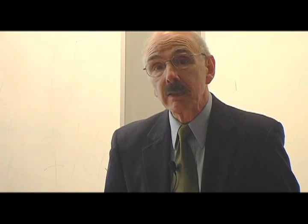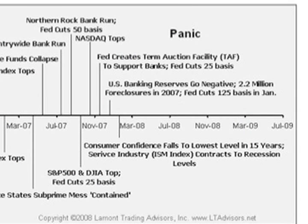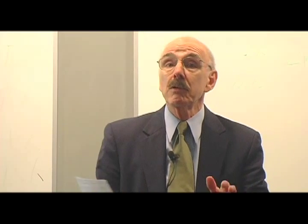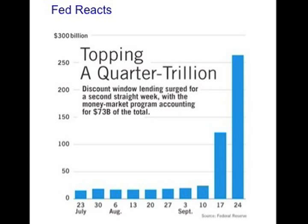The Fed created an auction facility to provide emergency funding for banks in November of 2007. In December of 2007, U.S. banking reserves turned negative. In March of 2008, consumer confidence fell to its lowest level in 15 years. In July of 2008, Freddie Mac collapsed. This chart shows volume of stock sales of Freddie Mac and its stock price — in July 2007 you can see the stock price plunging and volume increasing. The federal government had to put Freddie Mac, a mortgage insurance lender, into receivership. From July through September of 2008, the Fed had already lent a quarter of a trillion dollars to prevent banks from failing.